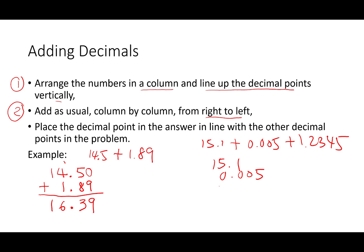0.005 and then 1.2345. Again, the vacant space here we can fill it with 0. Once we do that, we will proceed as usual. So 5, 9, and then that's where the decimal point is. That's how we do addition of decimals.